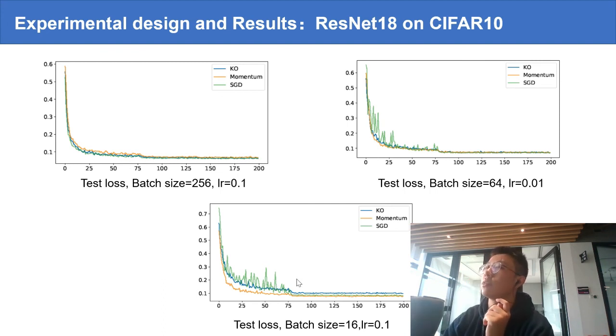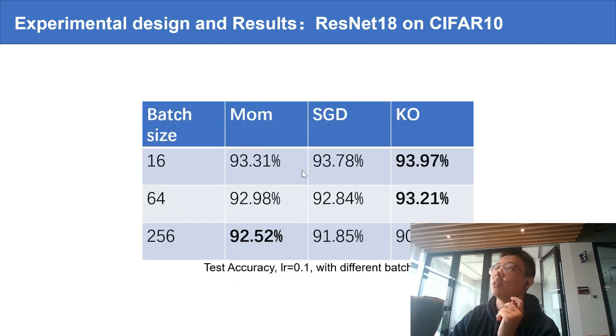The momentum method performs poorly and the SGD method introduces additional noise and variance in the training curves. We see the same phenomenon that for large batch size, the momentum method excels.